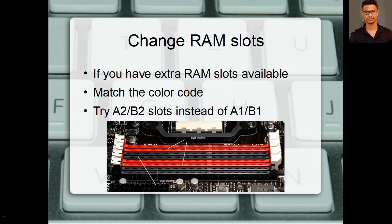Another easy solution you can try before changing the rated speed: when your motherboard has four RAM slots, they're color-coded — for example, two orange slots and two black slots. The motherboard specification or manual will say to put your RAMs in the A1 and B1 slots, which in the picture here are the two orange ones. But if for some reason those two slots are causing failures, instead of A1 and B1, put your RAM in A2 and B2. That way you'll still achieve dual channel mode, and that might fix all your problems.